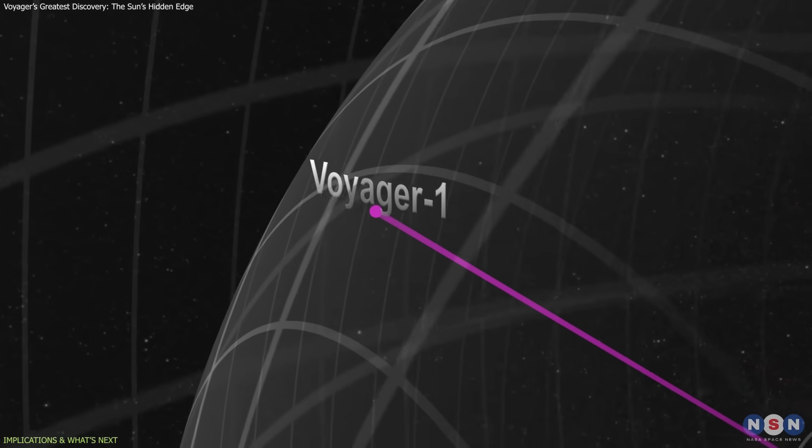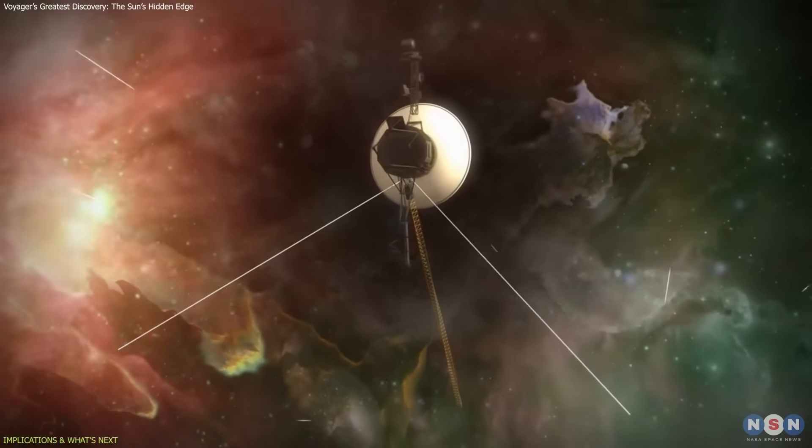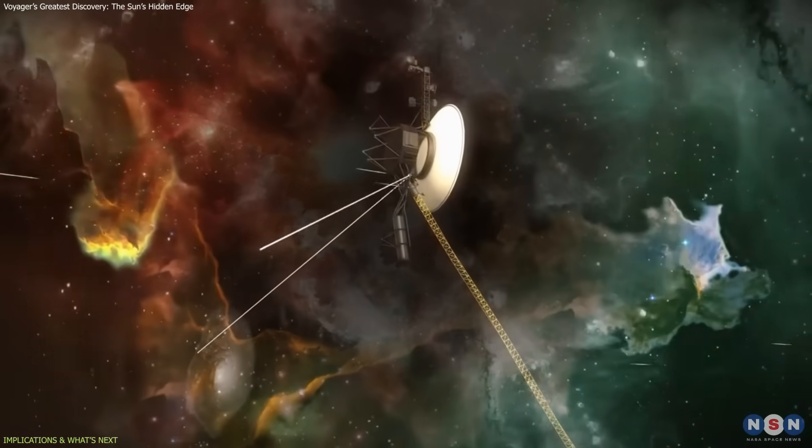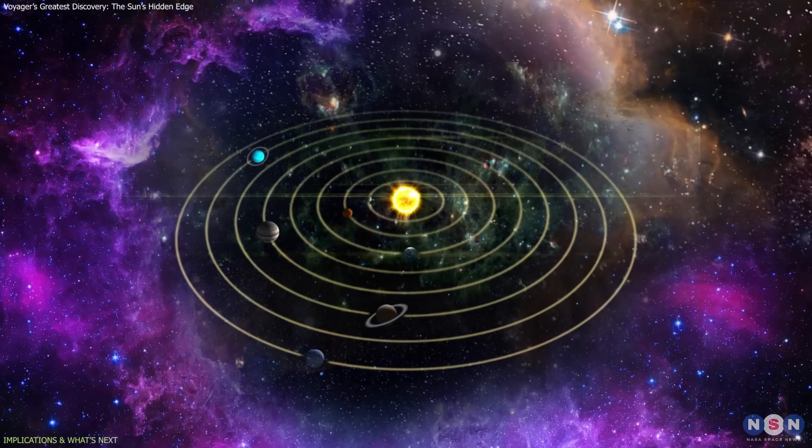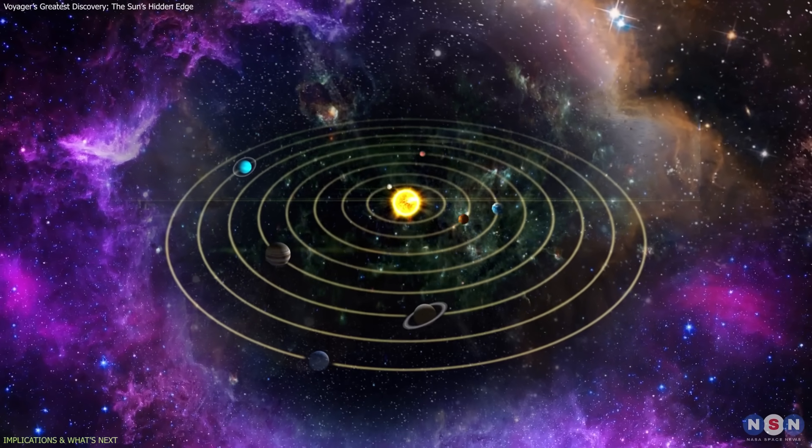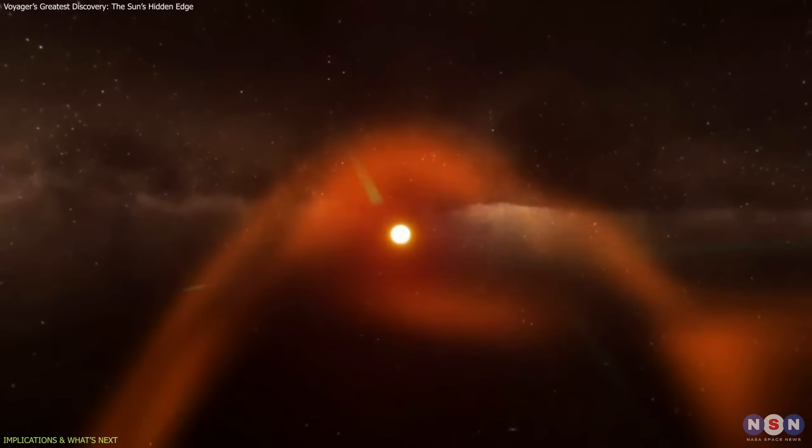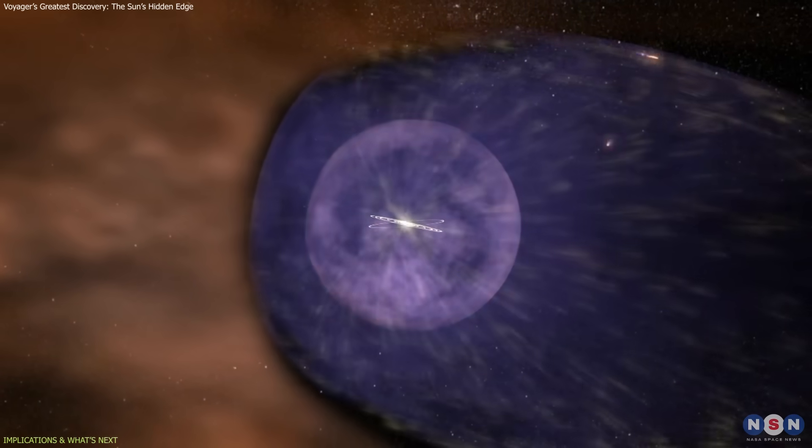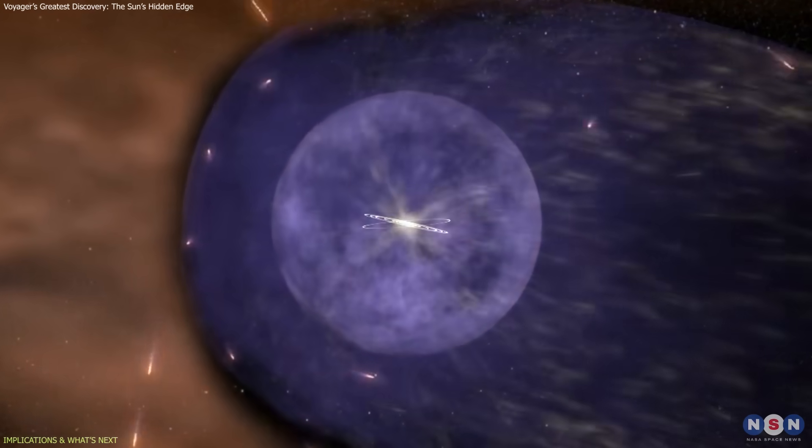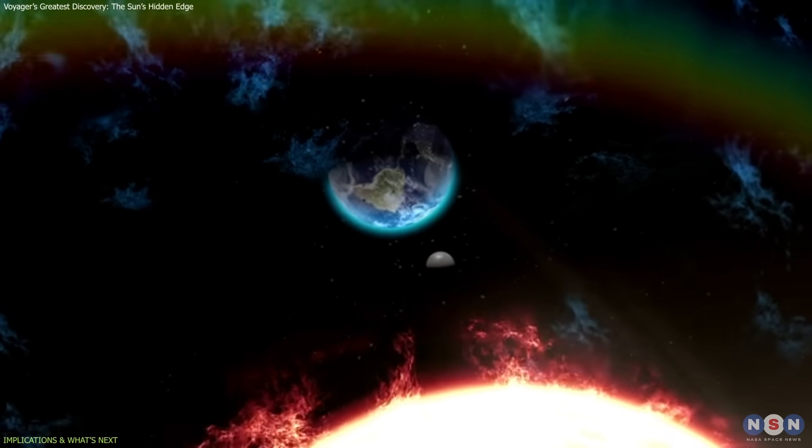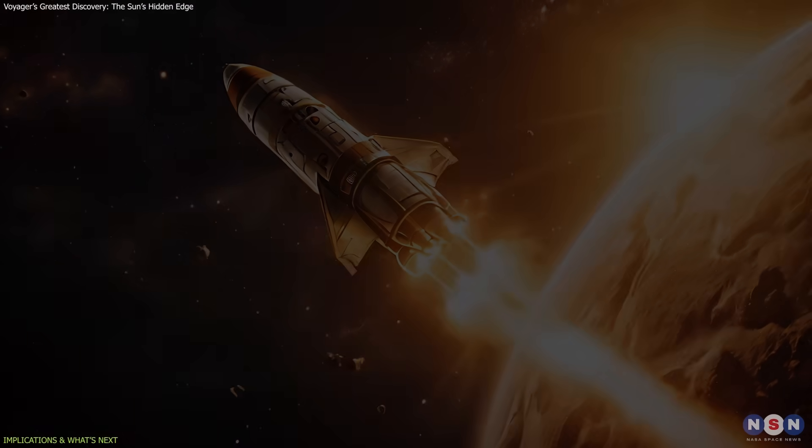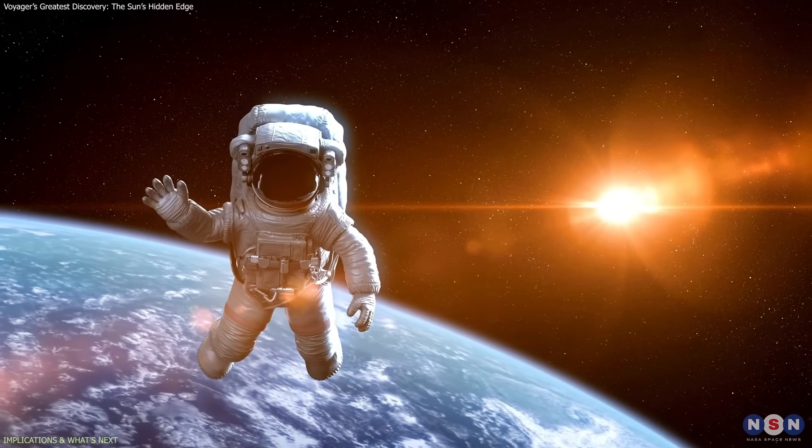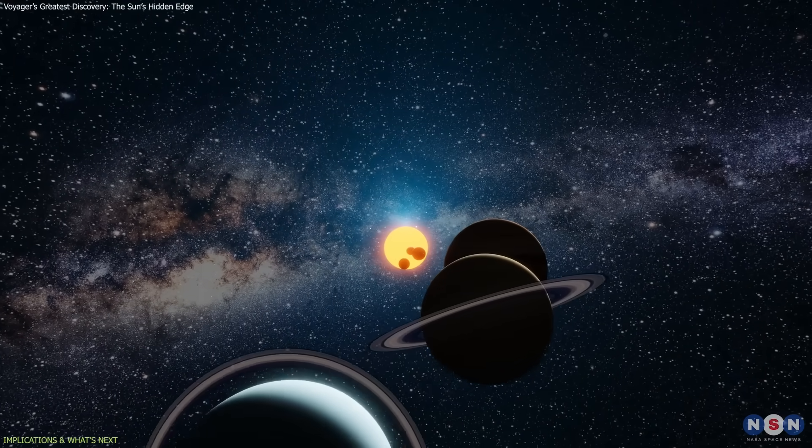Voyager's journey beyond the heliopause marked humanity's first step into interstellar space, not through observation, but through direct presence. Understanding this region helps scientists model how our solar system interacts with the galaxy and how the heliosphere protects us from cosmic radiation. By learning how this natural shield expands and contracts, researchers can better forecast space weather effects, a crucial factor for spacecraft systems and astronaut safety on long missions.